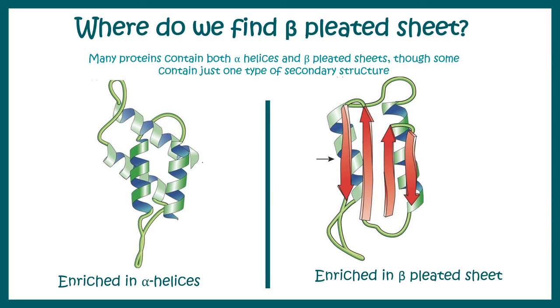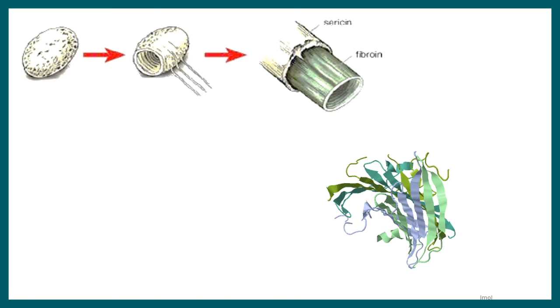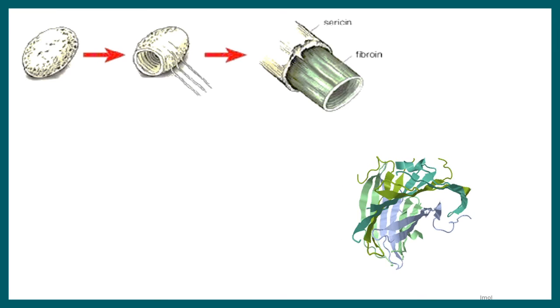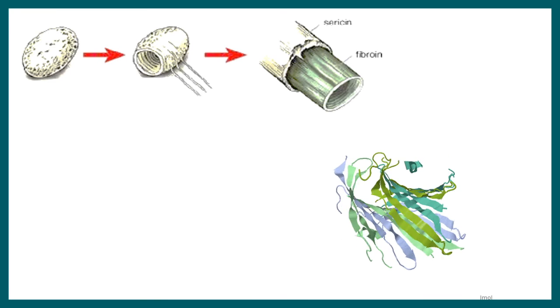Just to give you an example, silk or fibroin—this particular protein is very much enriched in beta pleated sheet.